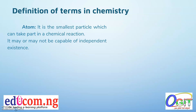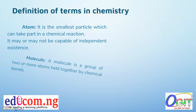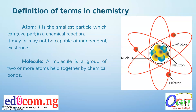An atom is the smallest particle which can take part in a chemical reaction. It may or may not be capable of independent existence. It is known to consist of a centrally located nucleus surrounded by a cloud of electrons. The nucleus contains neutrons and protons.